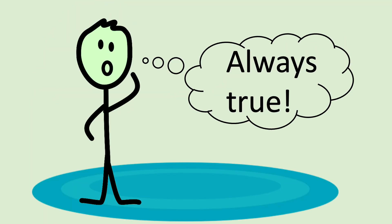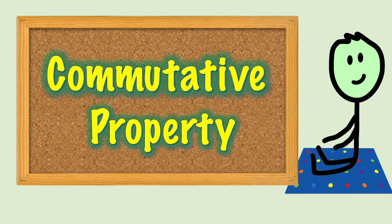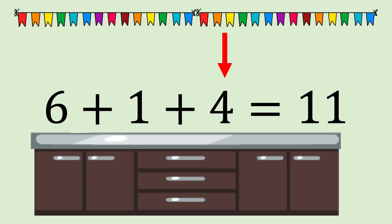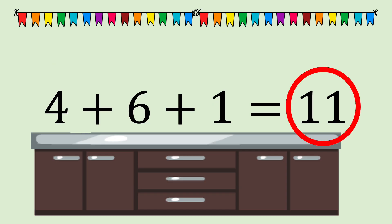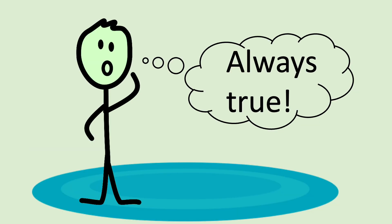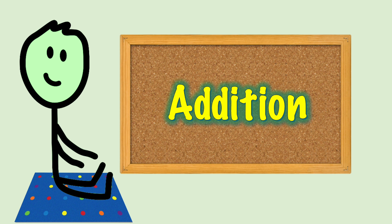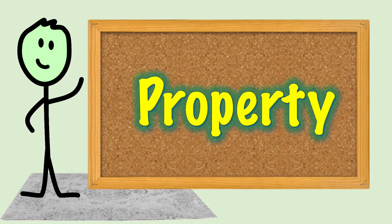What is a property in a mathematical operation? A property in a mathematical operation is something that is true always for that operation. For example, we talked a while back about the commutative property of addition. This means that no matter what order you add the addends together, the sum will always be the same. Because this is true for all addition all of the time, it's called a property of addition.